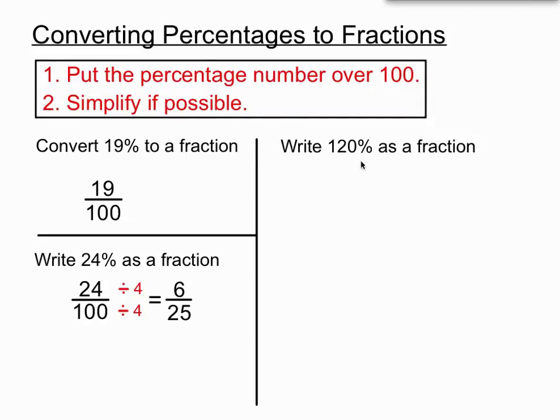This time we're asked something a little different: convert 120% to a fraction. Now 120%, if you think about it, is over 100%. So instead of getting a proper fraction, where the small number is over the big number, we might expect to get an improper fraction, where the top number is bigger than the bottom number.